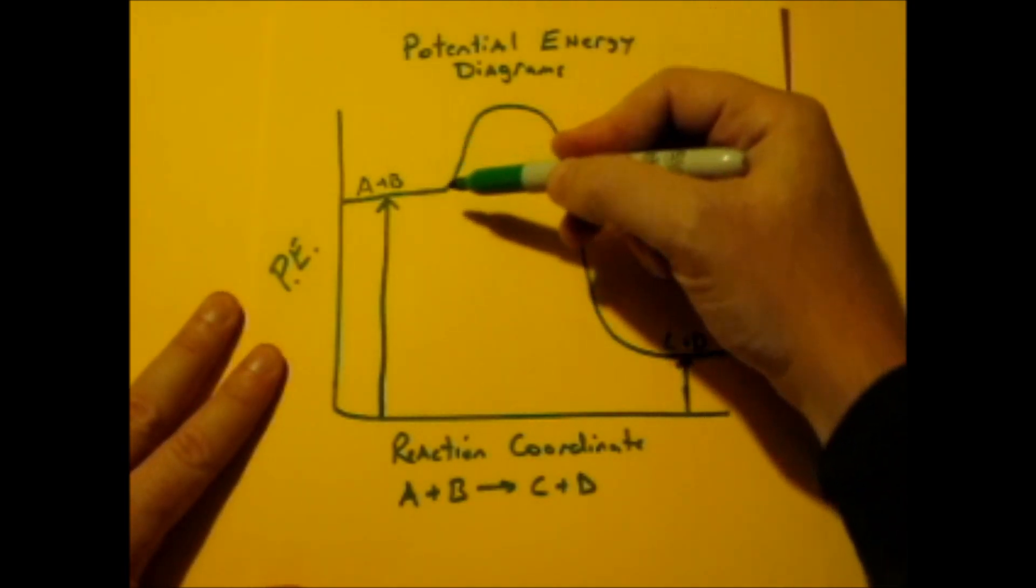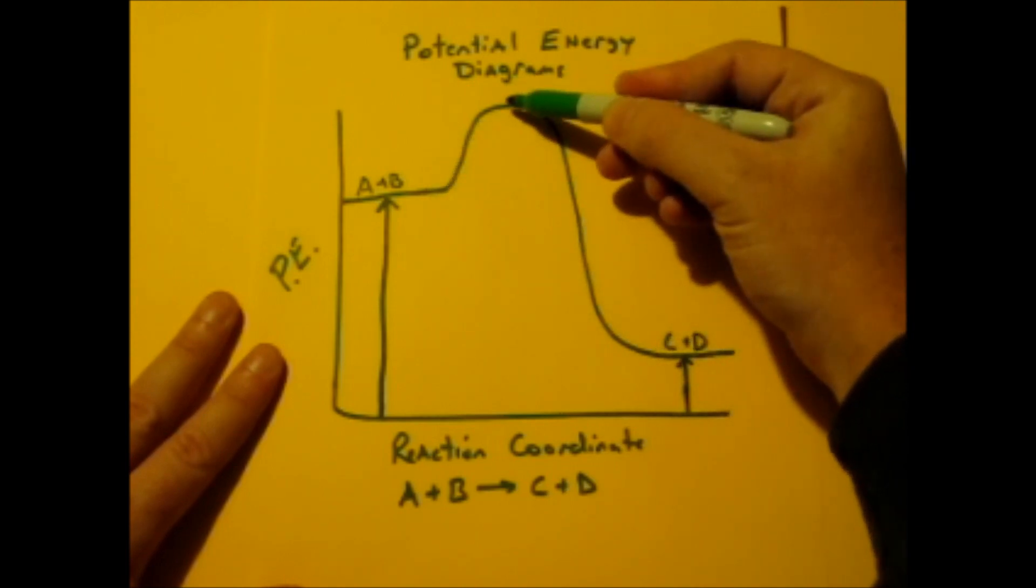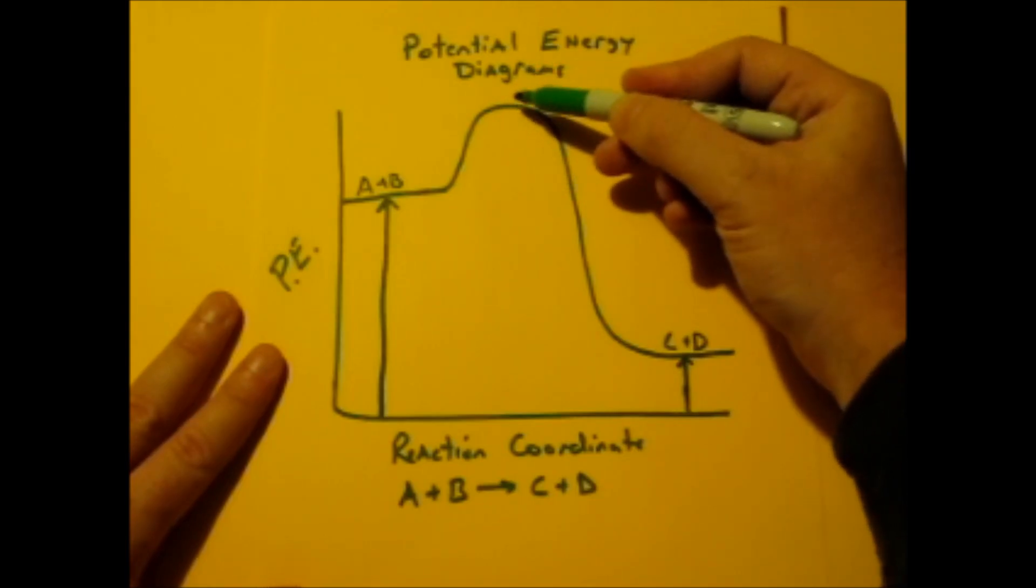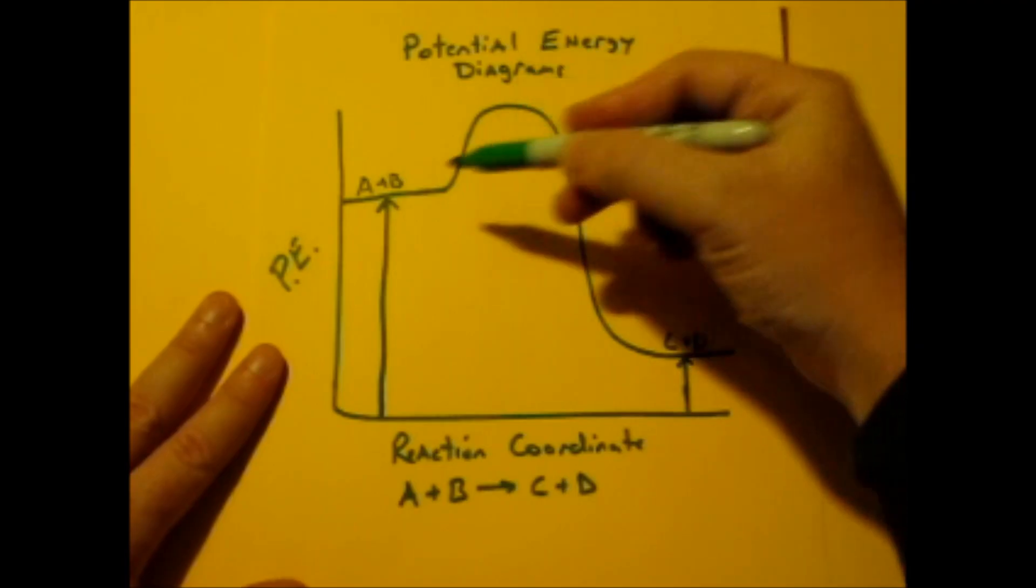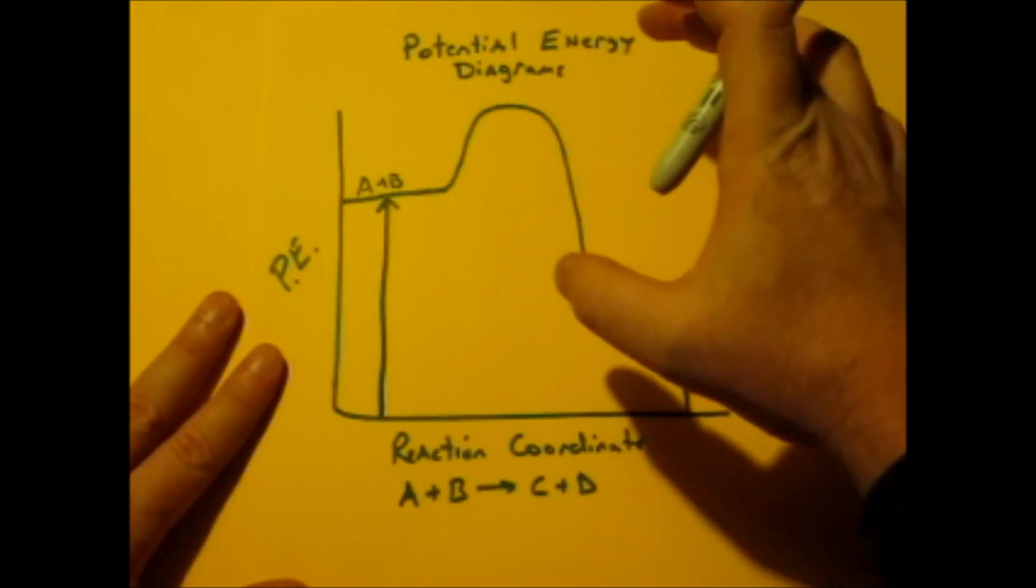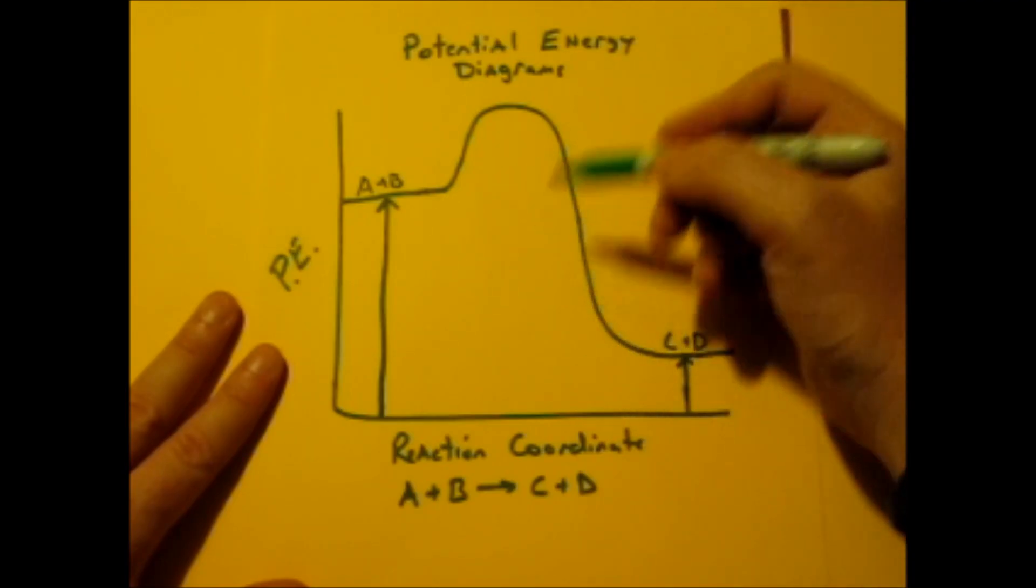There's something called the activation energy. That's to take us from where the reactants start to the top of this hill. This hill right here represents the highest energy state that the reaction has before the complete transition from the reactants to the products. All the atoms are kind of attached. It's about to change, but it hasn't, and that's the high energy state.